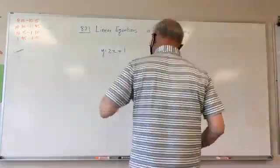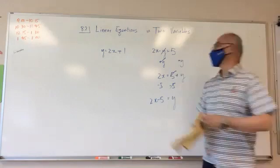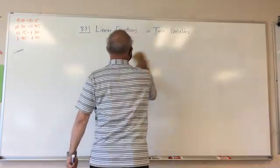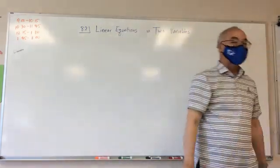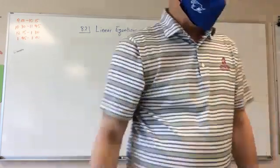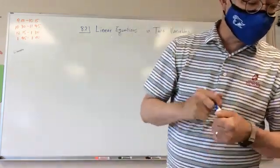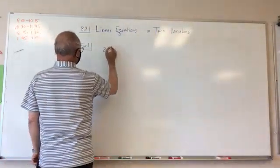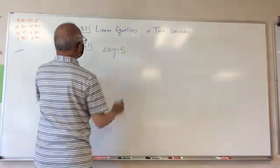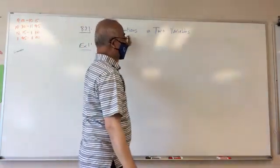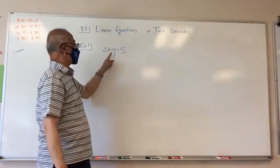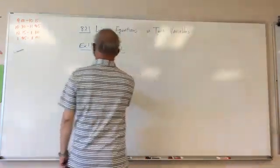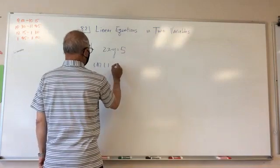Example number one: tell whether the ordered pair is a solution of two x minus y equals five. This is a linear equation in two variables, so I have two variables, x and y. The first point is (1, -3). So the first point is one and negative three.